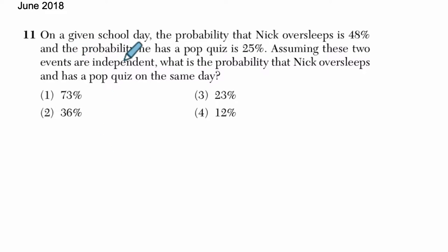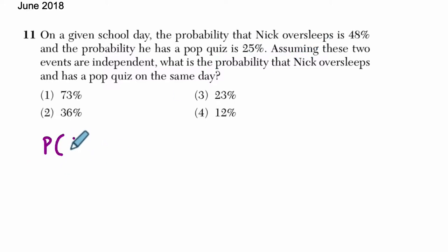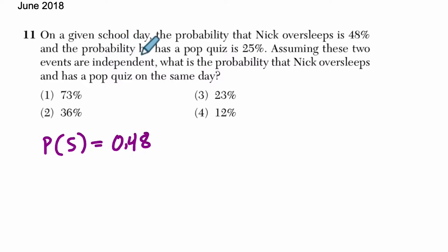So we're told on a given school day, the probability that Nick oversleeps is 48%. So the probability of him oversleeping is 48%. And the probability that he has a pop quiz is 25%.